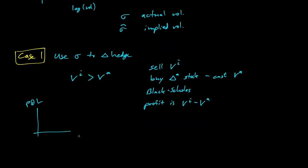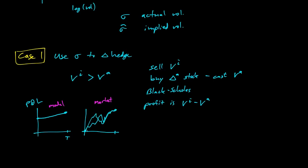Looking at our P&L graph: at time zero we have a profit VI − VA, and at expiration we have our known profit. But this is our model — marking to market, we start at zero and must end at the profit. The path between those two points could be some crazy fluctuating route, much like holding a bond to expiration: you know the principal is returned at the end, but the bond value could fluctuate wildly as the market changes its mind.